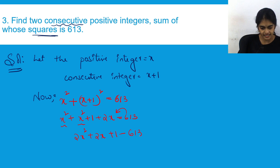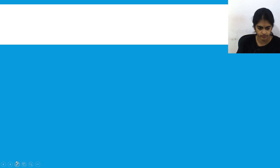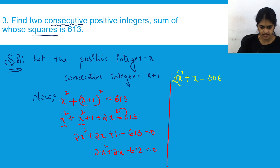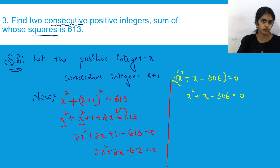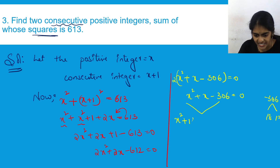This simplifies to 2x² + 2x + 1 - 613 = 0, i.e., 2x² + 2x - 612 = 0. Dividing through by 2: x² + x - 306 = 0. Now factorize: 1 × (-306) = -306. We split -306 as 18 and -17, since 18 + (-17) = 1 and 18 × (-17) = -306.